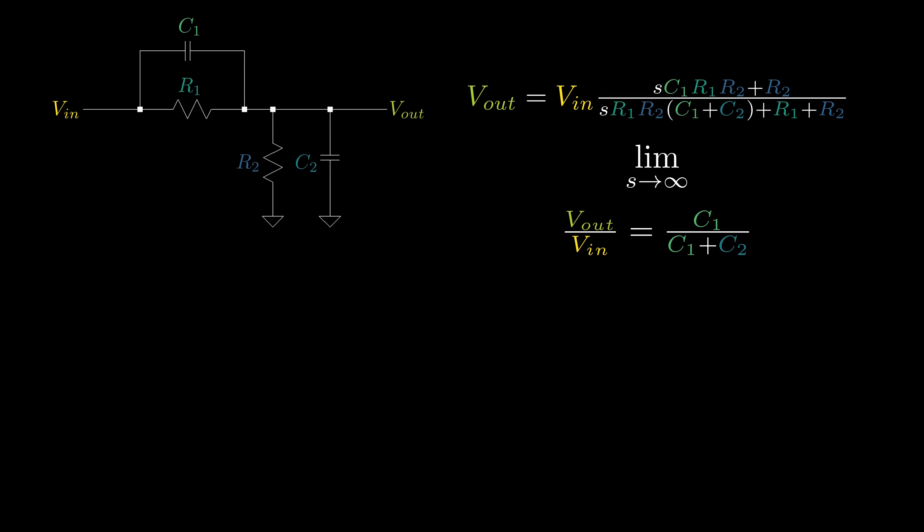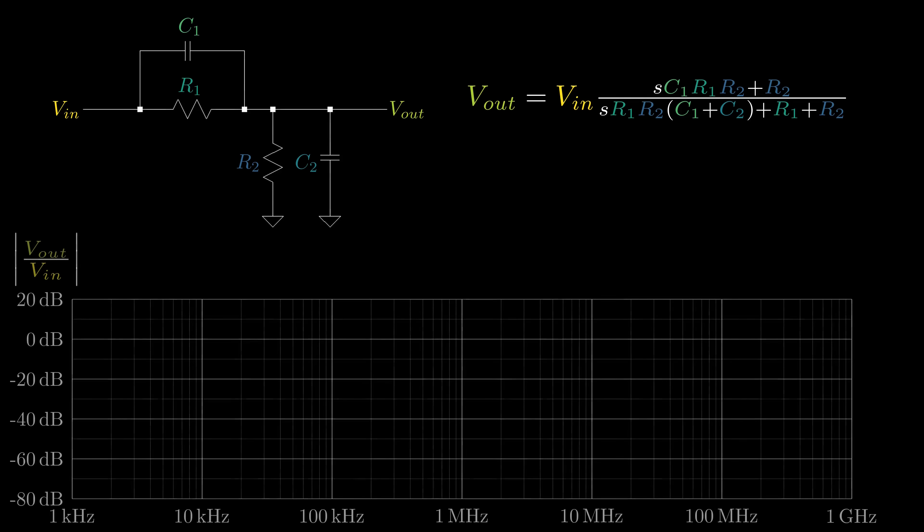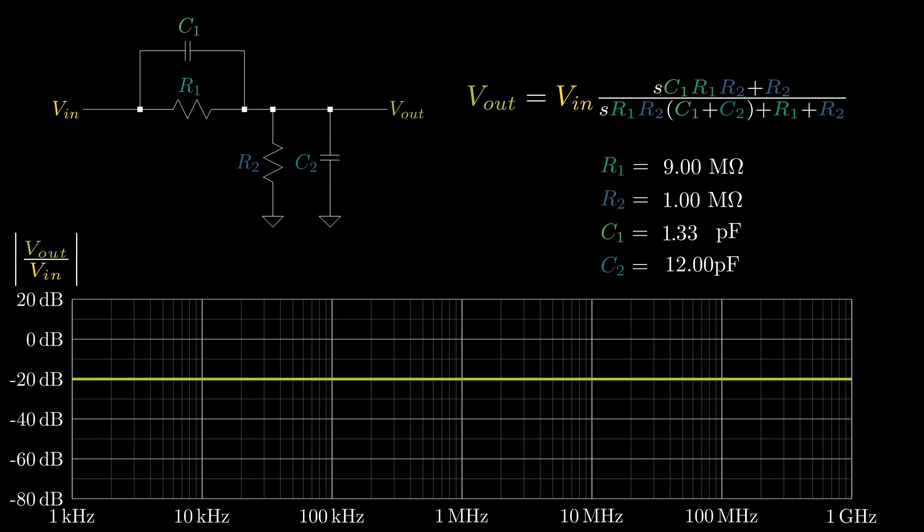In simple terms, at low frequencies, the resistor values set the gain, and at high frequencies, the capacitor values set the gain. If the attenuation factors are mismatched, there is shelf filter behavior, where there are different gains for high and low frequency. But, if the attenuation factors are matched, the attenuation is again constant over frequency.